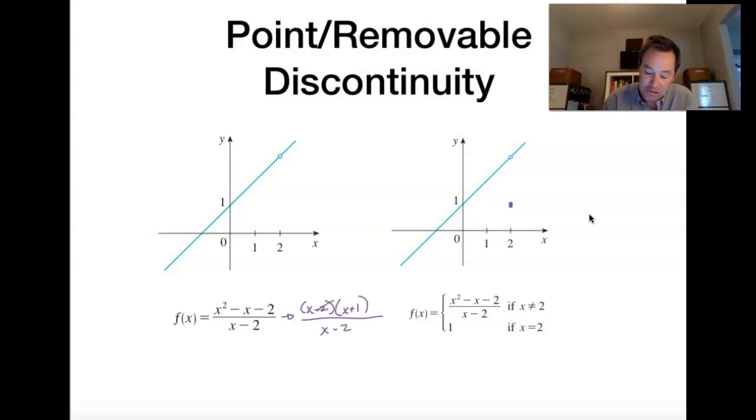So for this one, if I just got rid of that factor of x minus 2 and just were to graph y equals x plus 1, that would remove that hole in the graph.